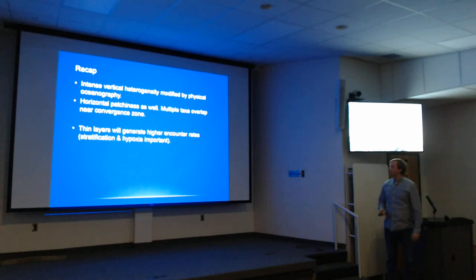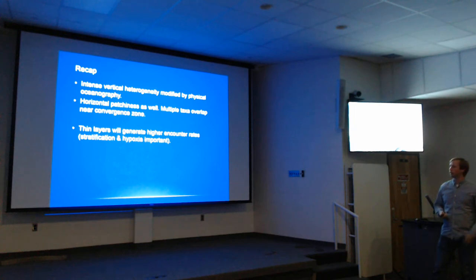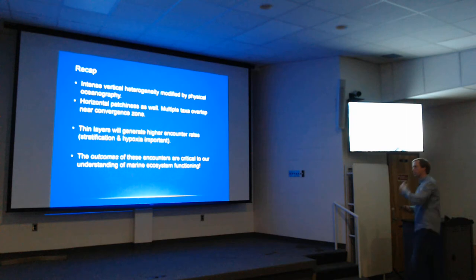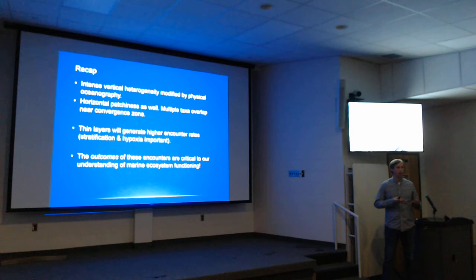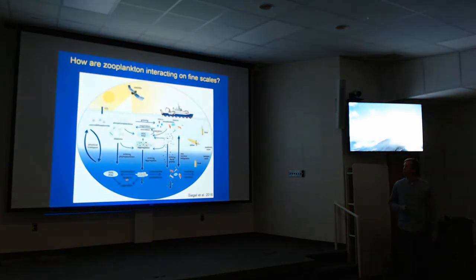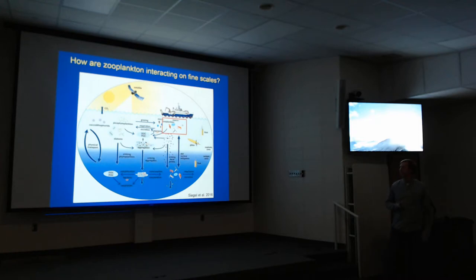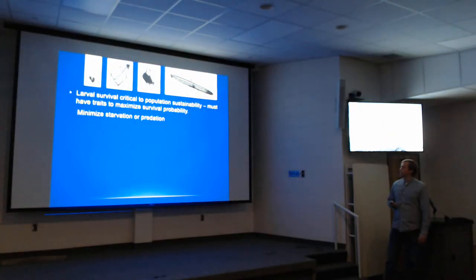This is a work in progress — we're still teasing apart some of the mechanisms driving this layer, but we can see there's a lot of vertical heterogeneity with the layer itself, plus a lot of horizontal changes as well. Features like this in the Gulf of Mexico will generate much higher encounter rates for larval fish and a bunch of different other zooplankton than if you were to take an average. But we're still just looking at spatial overlap. What's really important is the outcomes of these interactions — who are the winners, who are the losers.